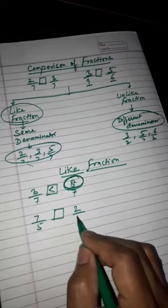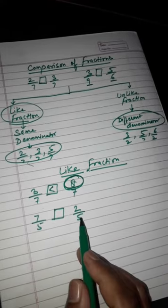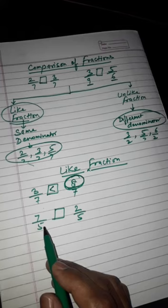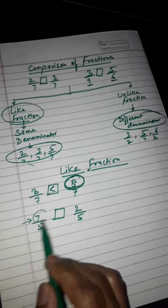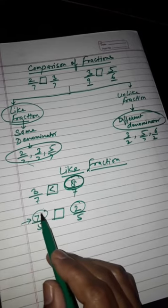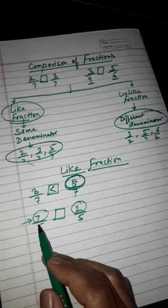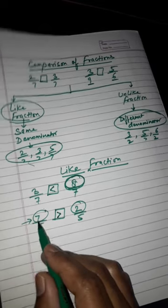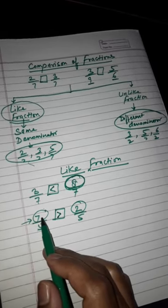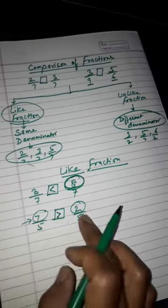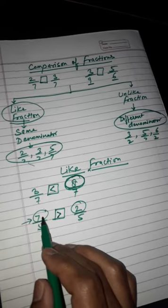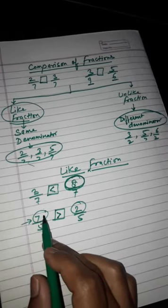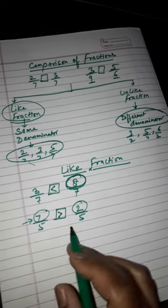Second example: 7 upon 5 and 2 upon 5. Here also we have the same denominators but different numerators. We have to identify the biggest numerator — which is 7, and the smaller one is 2. So the greater fraction is 7 upon 5, because 7 is the highest value between the two fractions.